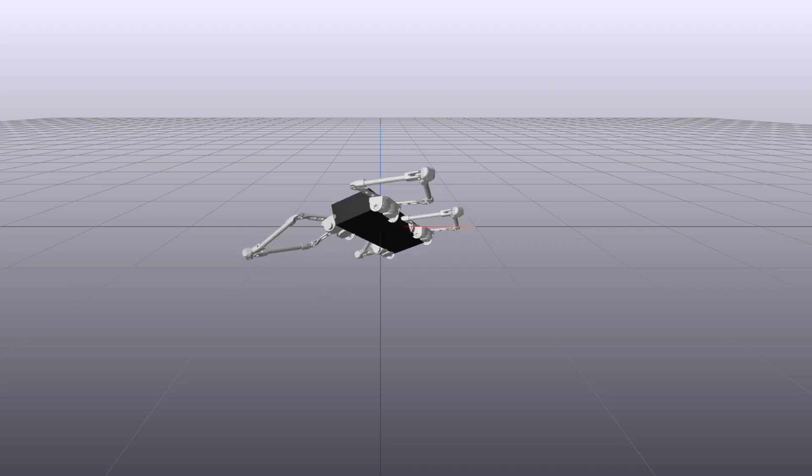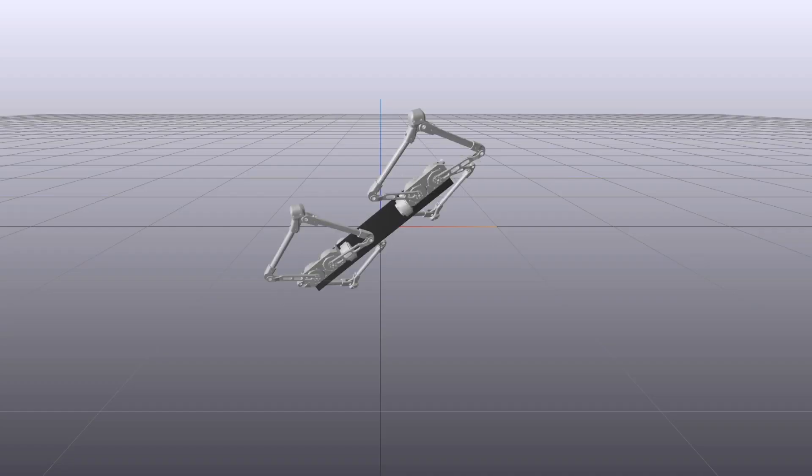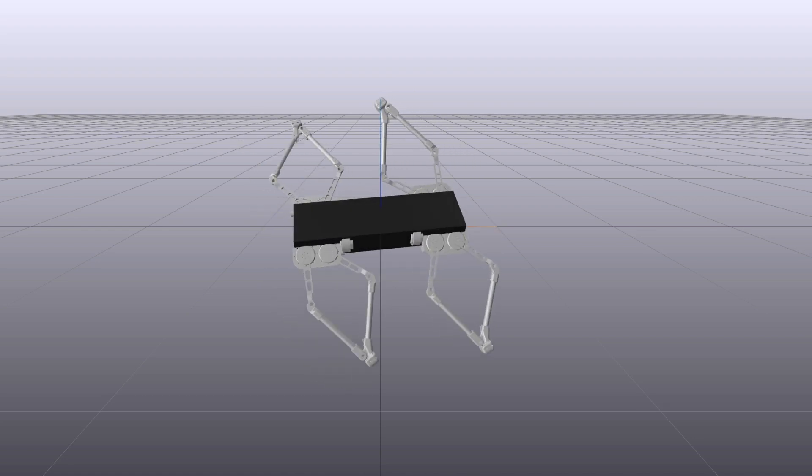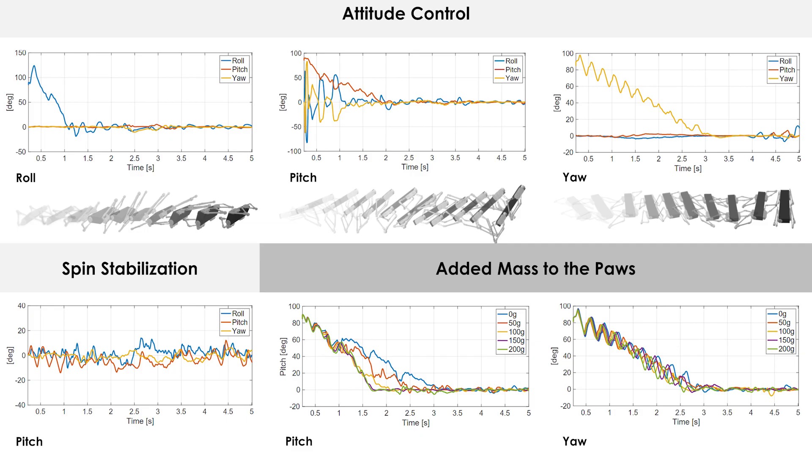Detailed simulation results allow presentation of the method's efficiency in complex maneuvers including attitude control as well as spin stabilization, while the effect of increasing the mass of the platform's paws is further investigated. The presented animation depicts results on reorientation to a desired reference quaternion value, while the presented plots are a sample of those shown in the manuscript.